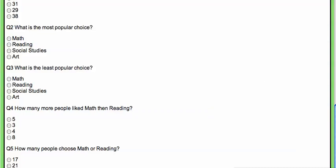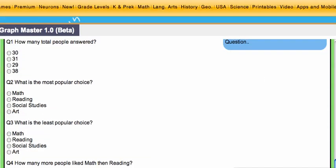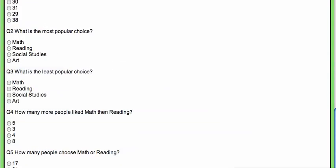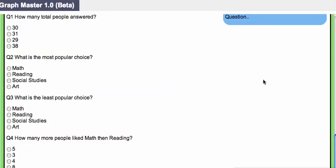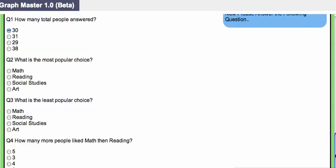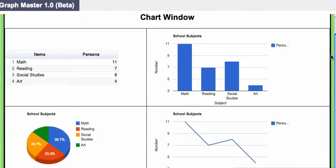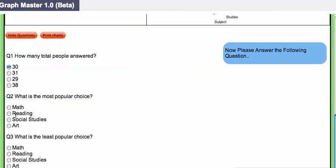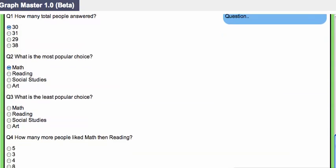How many total people answered? Well, I remember 30. What is the most popular choice? I could always scroll up to see my graphs, but it's clear that math is the most popular choice. The least popular choice was art.